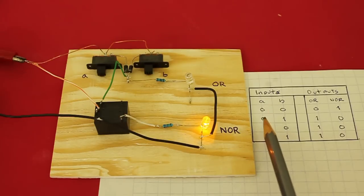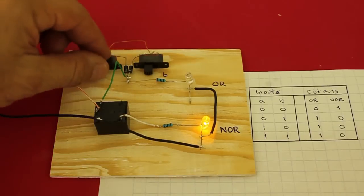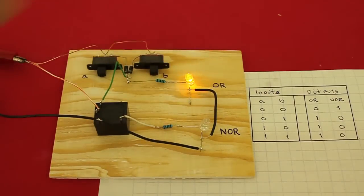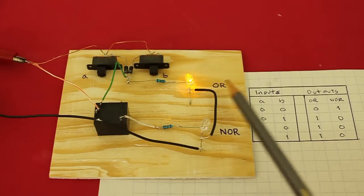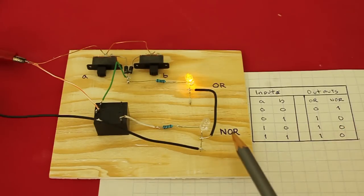Now, the next position is zero in A and one in B. Open and close it. And we have one in the OR gate and zero in the NOR gate.